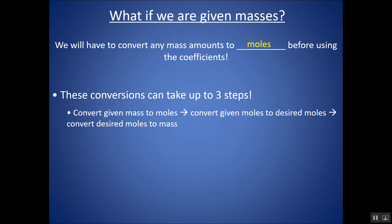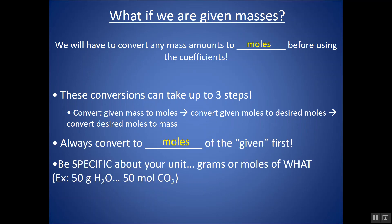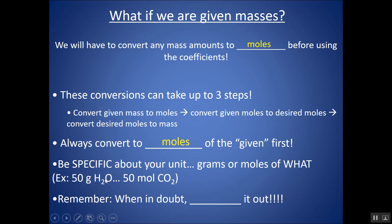These conversions can sometimes take up to three steps. If you're given mass of one substance, you might have to mole that out, then convert to moles of another substance using the coefficients, and then maybe turn it back into mass using the molar mass of that second substance. Be very specific about your unit — 50 grams of H₂O versus 50 moles of CO₂. Show all your work with dimensional analysis.